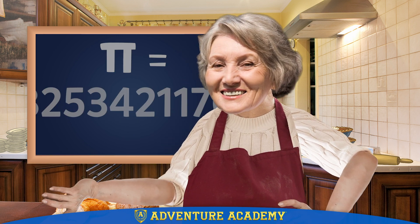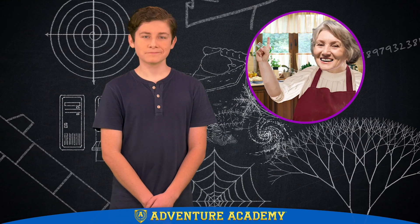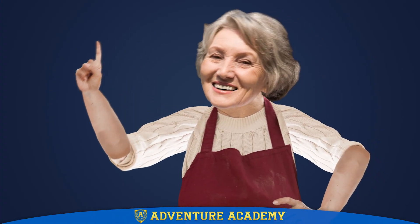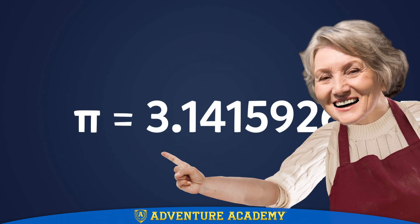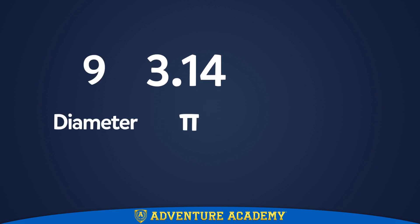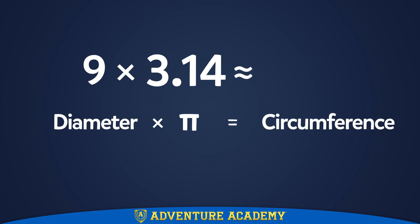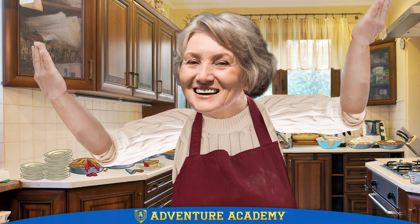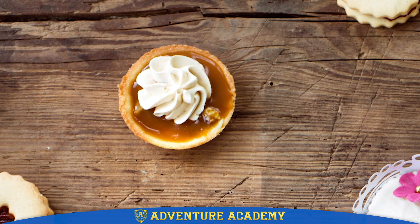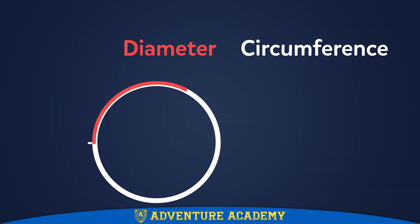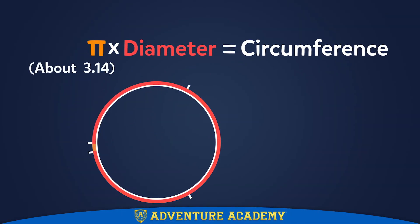Now, if I know my grandson, he's probably wondering how can people actually use pi if it goes on and on and on. Well, to solve many problems, you just round off pi to 3.14. So if the diameter of a circle is 9 inches, then you would multiply that by 3.14 to find out about what the circumference is — and that's 28.26 inches. This works no matter how big or small the circle is. It could be 2 inches across or 2 miles across. The circumference is always about 3.14 times the diameter.